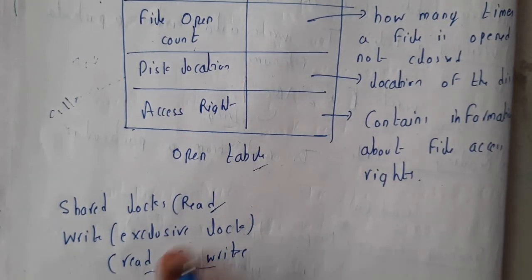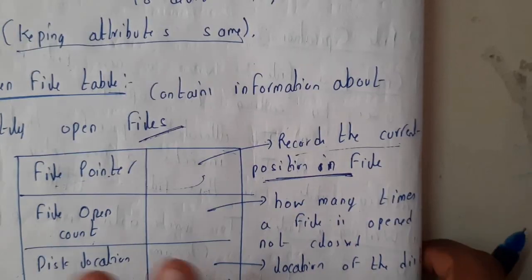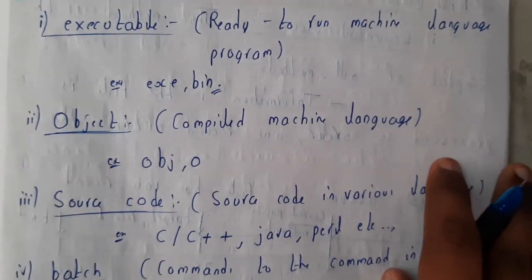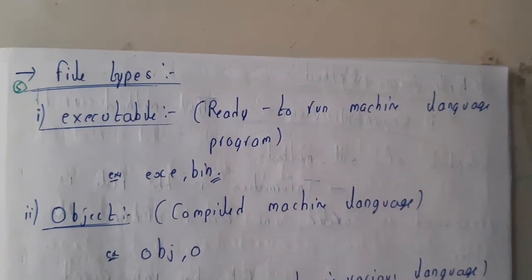So these are the few locks, guys. I hope everyone got at least a small idea on this open file table. In the next tutorial, we'll be going through types of files. So let us meet in the next tutorial. Thank you, thanks for watching.